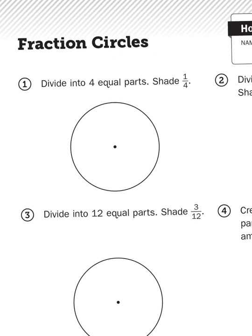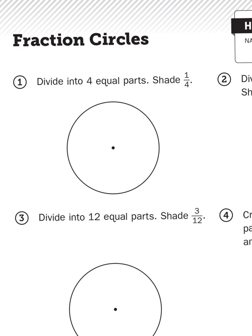Question number one says, divide into four equal parts, shade one-fourth. So first of all, when I divide a circle into equal parts, that means that all the parts have to be the same size.